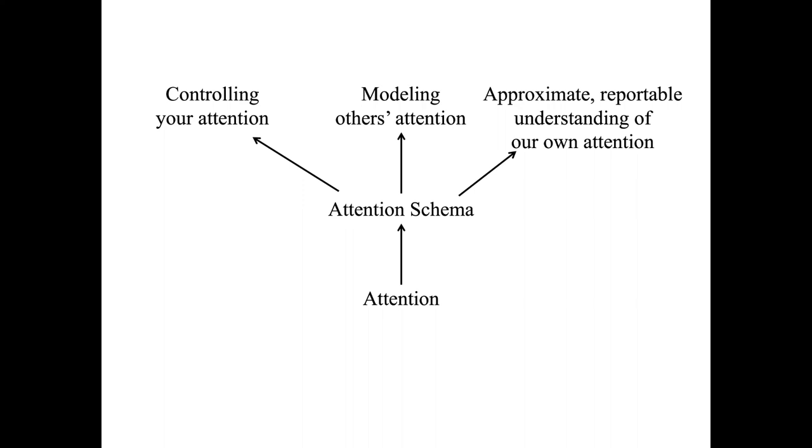In this account, your brain constructs a schematic model of attention. The model leaves out all the mechanistic details of how attention is really a competition between neural signals occurring physically in this and that network in the brain. The brain doesn't need to know that kind of detailed information. According to this model, this attention schema, the imperfect, detailed, poor description of attention, according to the attention schema, you possess an internal essence, a glow, divorced from any physical mechanism.